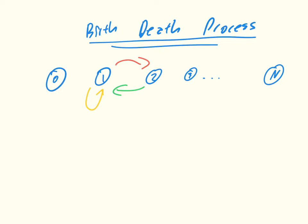We also have this final condition: once we're at 0, we don't move anymore, and once we're at n, we don't move anymore. So the general idea is that we have P(i, i+1) and P(i, i-1) being less than or equal to 1.